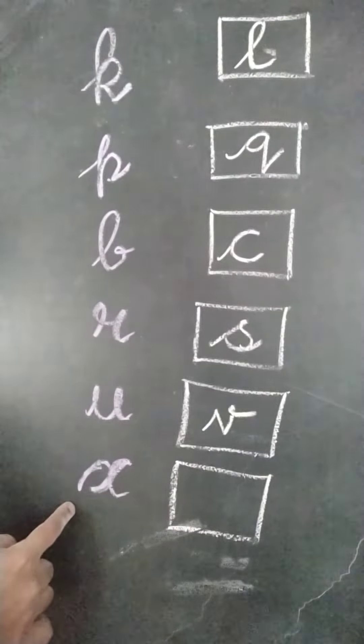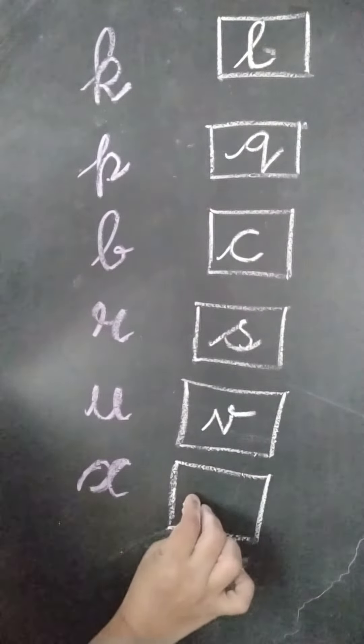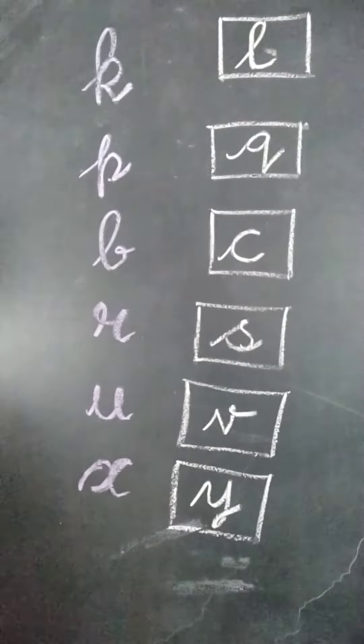The next alphabet is X. After X, cursive alphabet is Y. So children, learn to write the next alphabets of the given alphabet. Thank you.